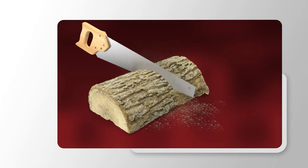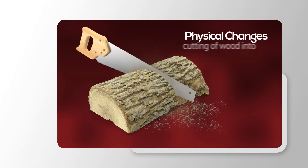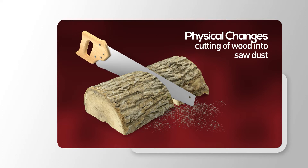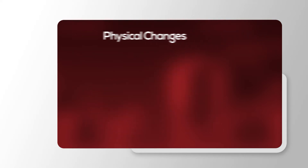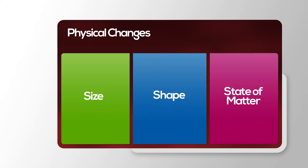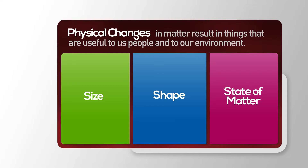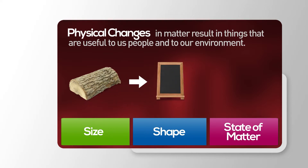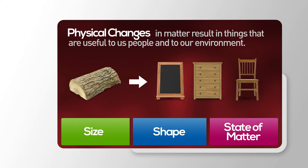Here's another one. Changes in size, shape, or state of matter are all evidence of physical change. Physical changes in matter result in things that are useful to us people and to our environment. For example, this simple piece of wood can be used to make beautiful furniture. Wood can be used to make frames, cabinets, and chairs that you might be using right now. So those are physical changes.